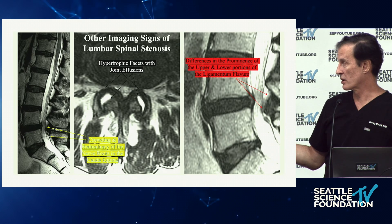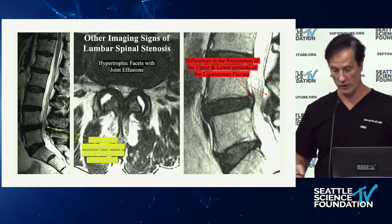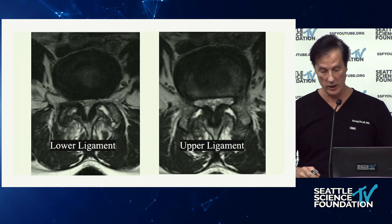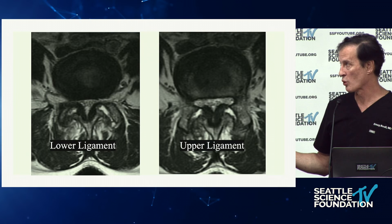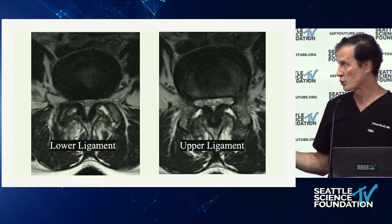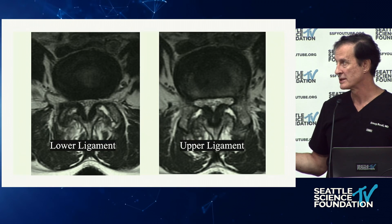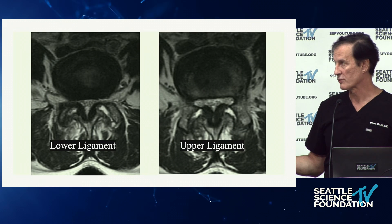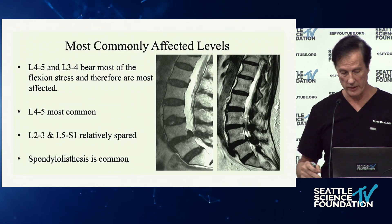The ligamentum flavum slants from posterior to ventrally inferior and has a different appearance. In the upper part, there's more ligament and more protrusion into the canal, taking it from a triangular shape to a real trefoil shape — that's a term from the botany world. This is a triangular shape for the lower portion of the ligament.